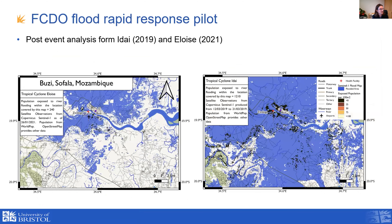We can also see for Idai and Eloise around the town of Buzi, which was very badly hit by Idai in 2019, the difference between the observed flooding from Sentinel-1 for Eloise and Idai. The models indicate this is the difference between a one-in-five year and something like a one-in-200 to 250 year event. We see very substantial differences in flood extents and exposures — differences that are just not quite replicated in the original versions of our model.